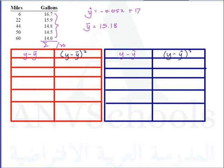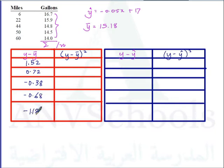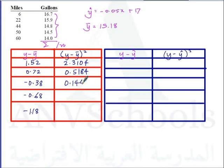Now we can get y minus the mean. The deviations are: 1.52, 0.72, negative 0.38, negative 0.68, and negative 1.18. The squares of these deviations are: 2.3104, 0.5184, 0.1444, 0.4624, and 1.3924.